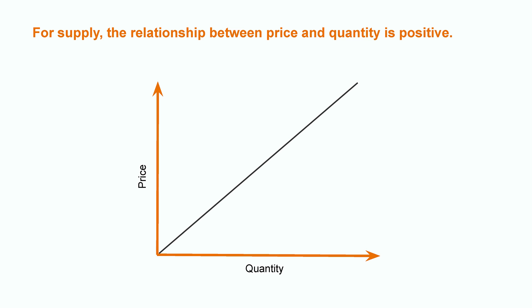We represent this relationship as follows. On the y-axis: price. On the x-axis: quantity. The relationship, geometrically speaking — the slope — is positive.